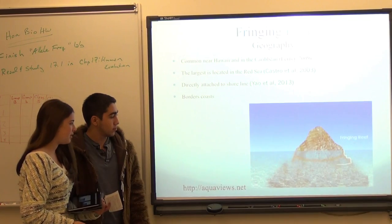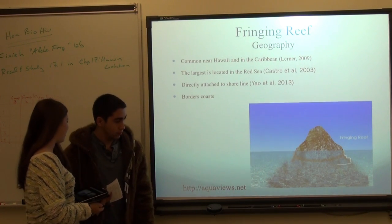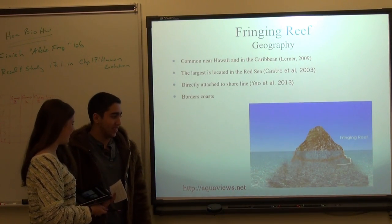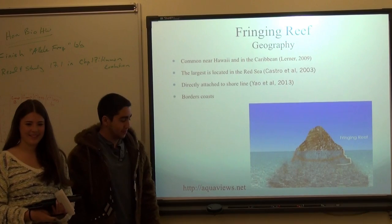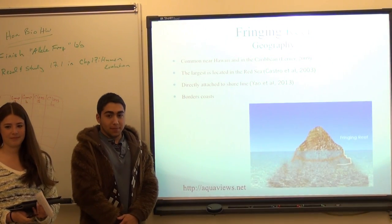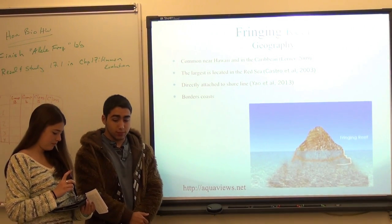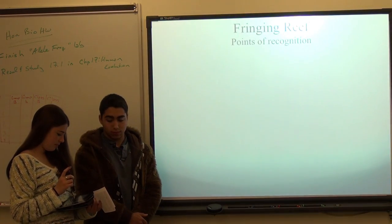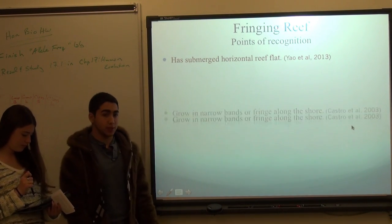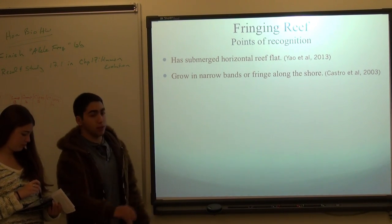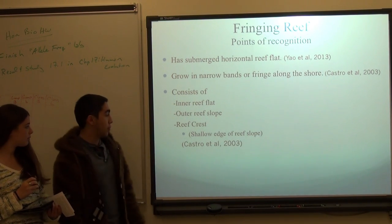That's a little diagram and you can see the fringing reef is kind of on the side of the area. We're looking for points of recognition as a submerged reef flat, which is the closest part to the land. It grows narrow bands or fringes along the shore, as we saw in the previous picture, and it has three main parts: an inner reef flat, an outer reef slope, and a reef crest.